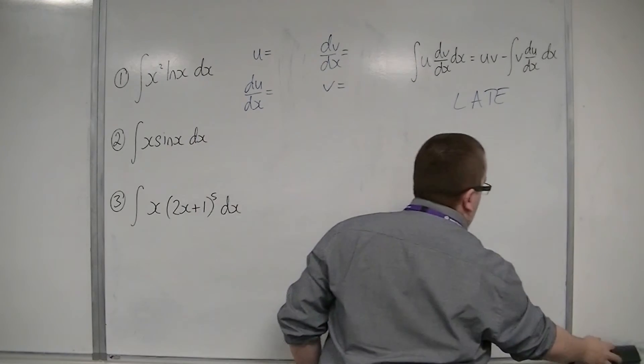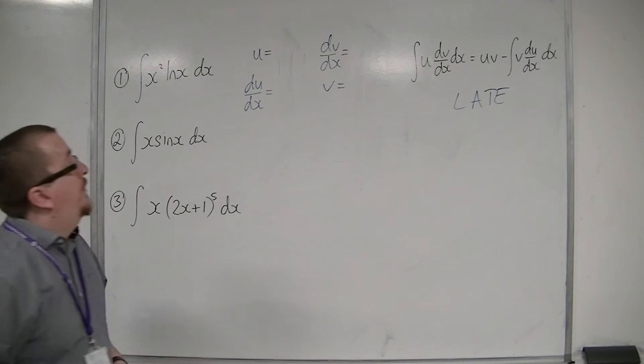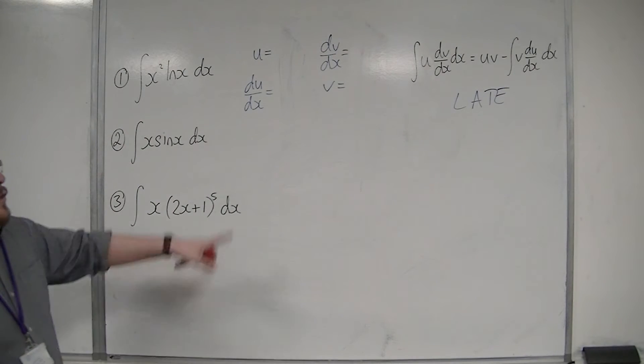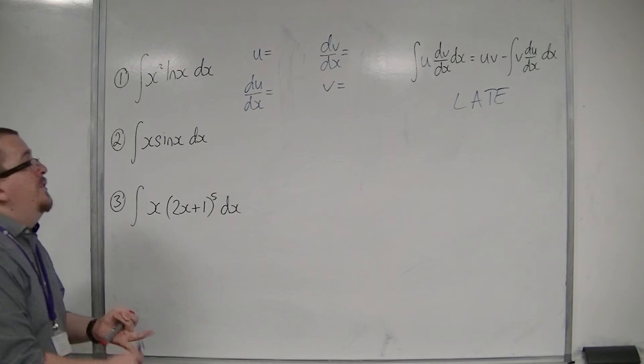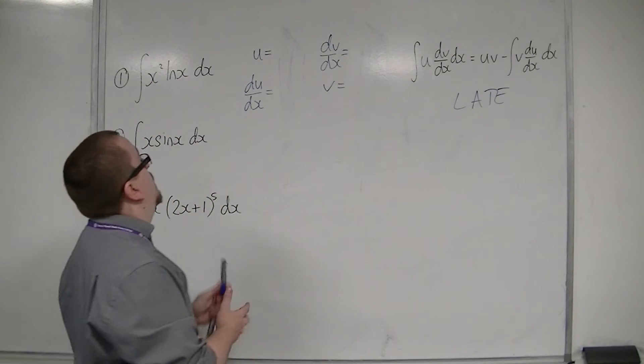So let's look at the second one, x sine x dx. So using LATE, there are no logarithms, but there is some algebra. So x must be u.